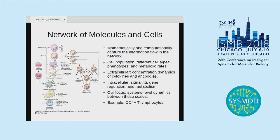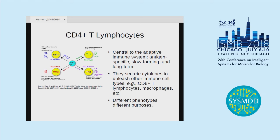We are using CD4 plus T lymphocytes as our example. They are central to the adaptive branch of the immune system — antigen-specific, taking a few days to develop after an infection, but once established, long-lasting, sometimes for life. They don't fight infections directly; instead, they secrete cytokines to help other cell types fight infections. As you can see in this diagram, they have many phenotypes — these are the four major ones — and they differentiate into different phenotypes for different purposes.